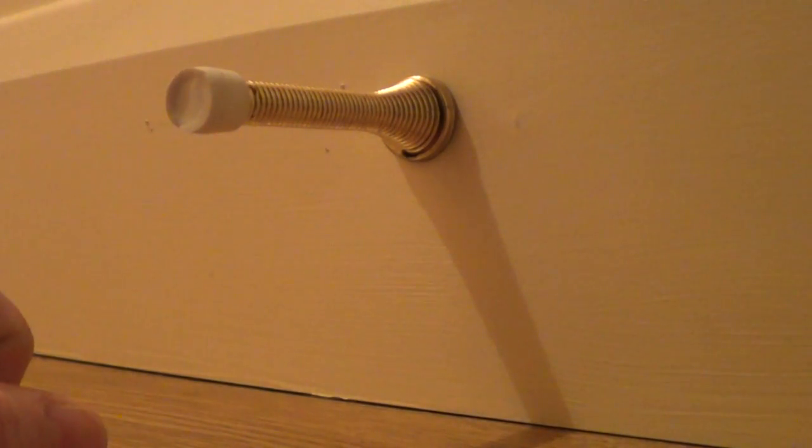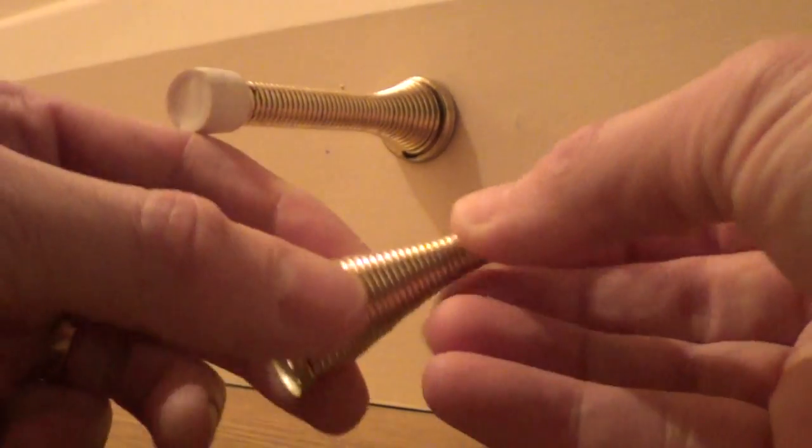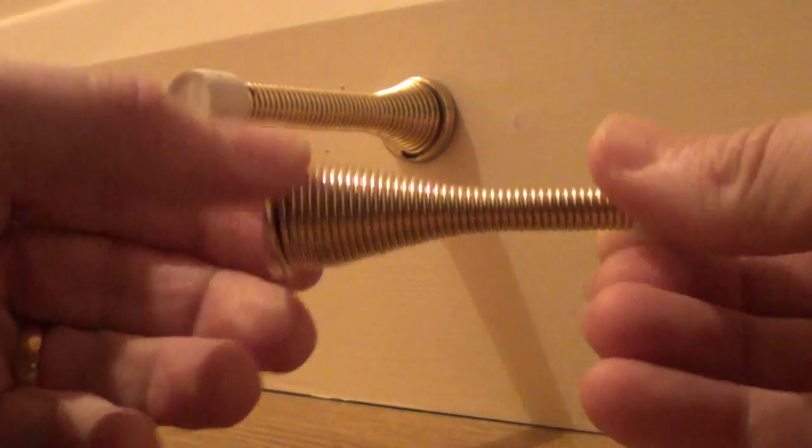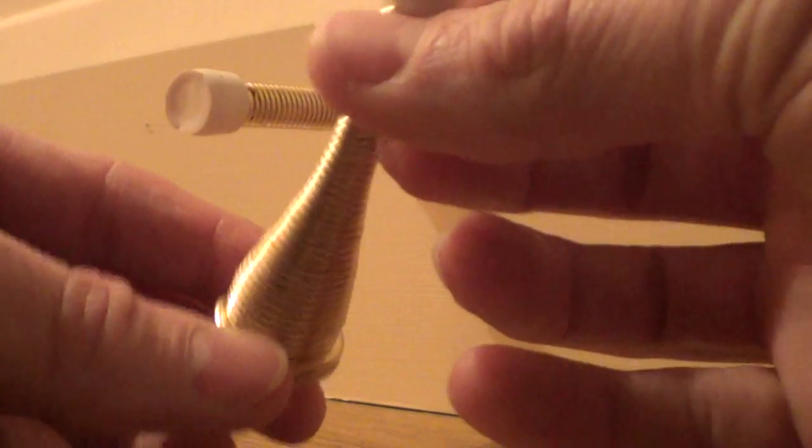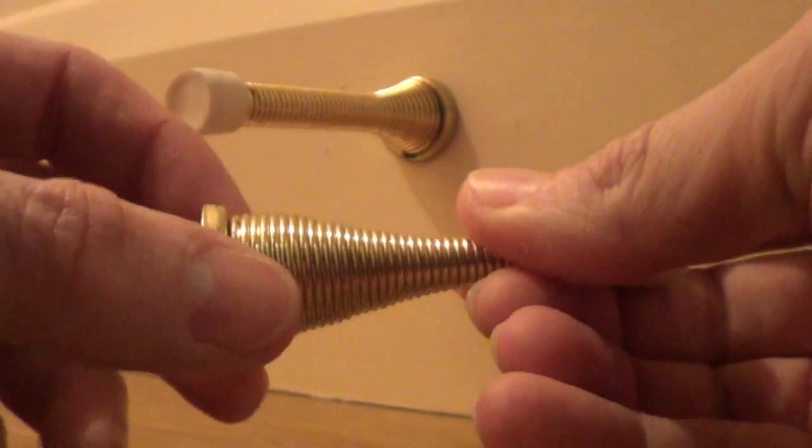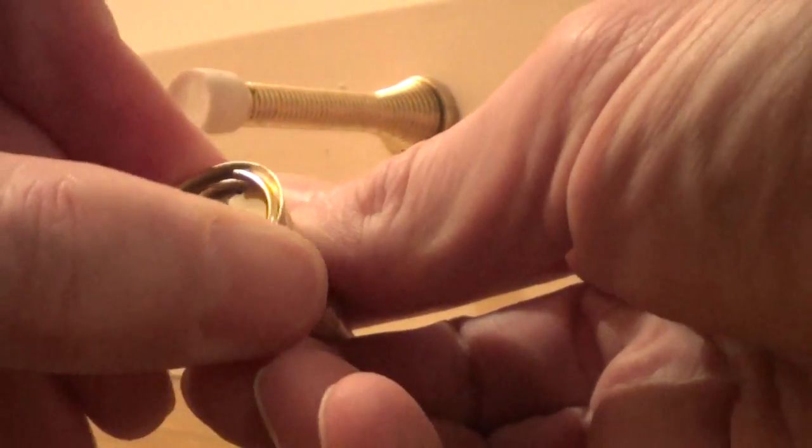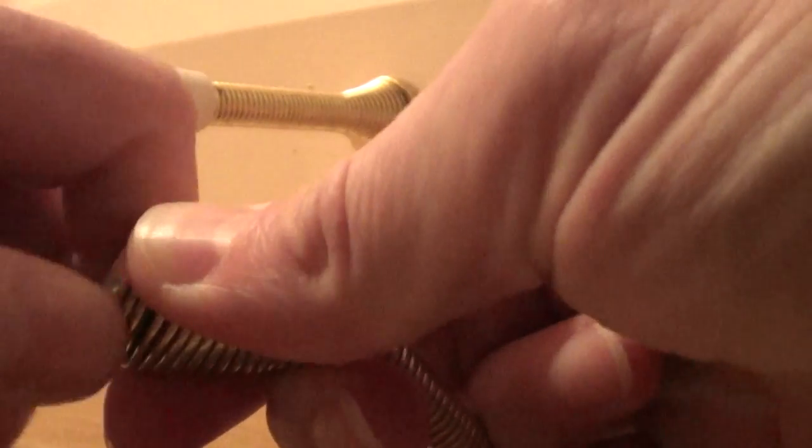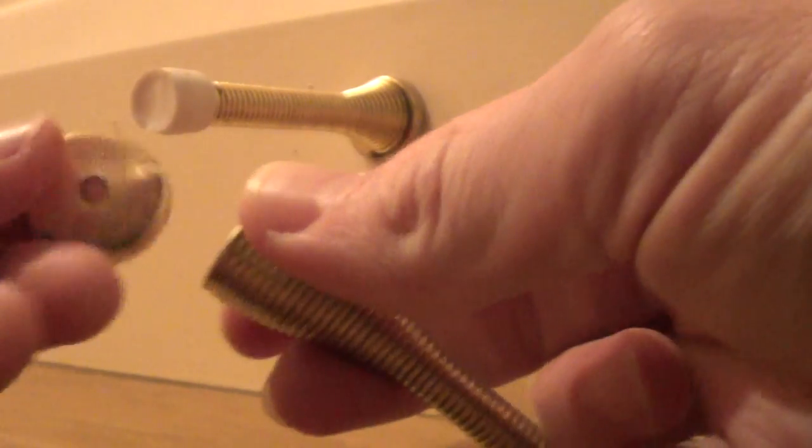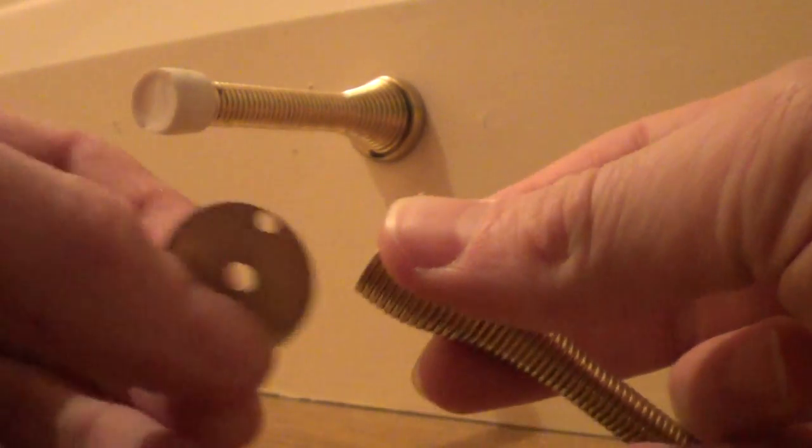Now if you do get one that is actually broken, they normally come like this and again you can hear there is a screw actually inside it. If you undo it like that, that is your base plate. Then it comes with a screw.